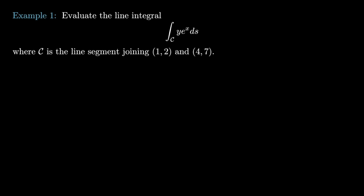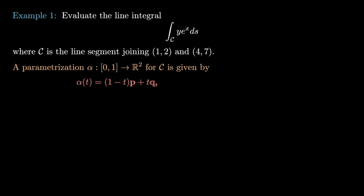The first thing we have to do is find a parameterization for this curve. We need to define a function alpha from 0 to 1 into R², such that the starting point is given by (1,2) and the end point is given by (4,7).